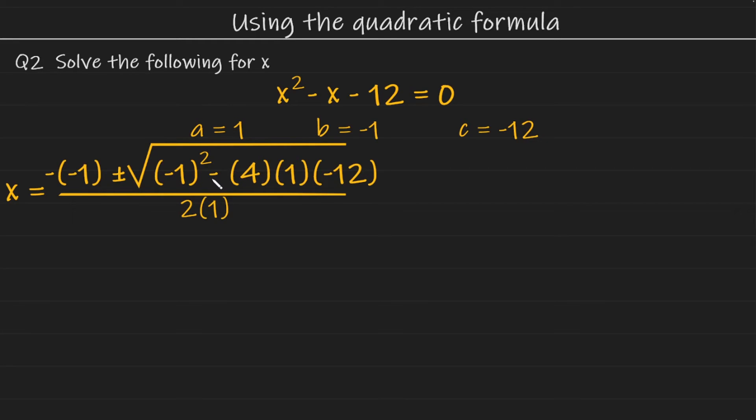And we all know again, that subtracting a negative number, two minuses make a positive. So it's going to be a positive one here, a positive one here, plus 48. Be very careful with the negative numbers. And on the bottom, we just have 2 multiplied by 1, which leaves us with 2.